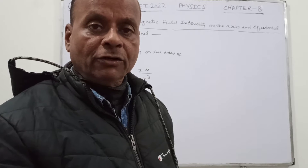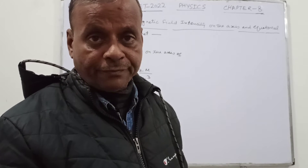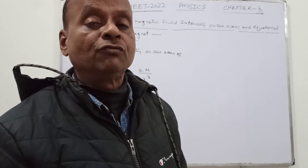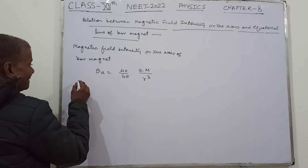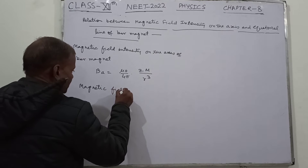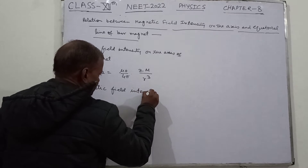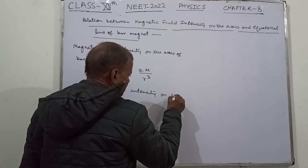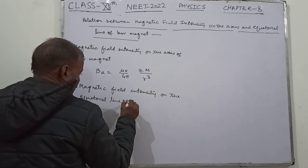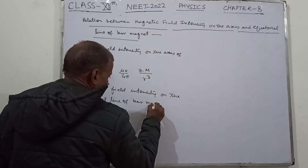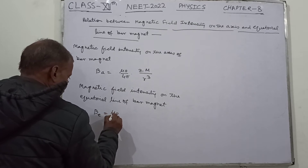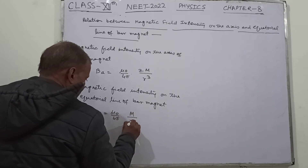Then we find the relation, and we keep in mind that the distance of the point of observation from the center of the magnet must be the same. So R is equal in both cases. Be is equal to μ₀ upon 4π into M upon R³.